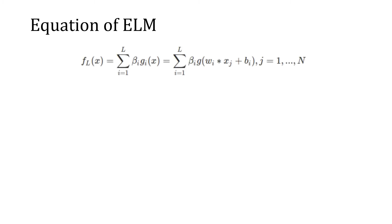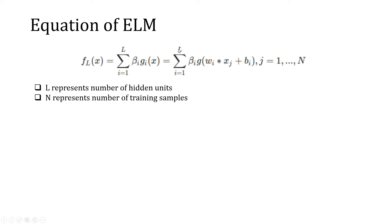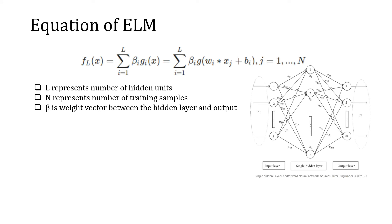If we look at the simple equation behind Extreme Learning Machines, it is somewhat similar to the equation of a feedforward neural network. Here, L represents the number of hidden units we will be using in the network, and N represents the number of training samples — so the N value differs based on training data. The major distinction compared to a feedforward neural network is the value termed beta (β), which is the weight vector between the hidden layer and the output layer.